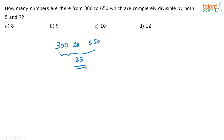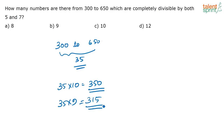We need multiples of 35 between 300 and 650. We know 35 × 10 = 350, so 350 minus 35 gives 315, which is 35 × 9. So the first multiple of 35 after 300 is 315.